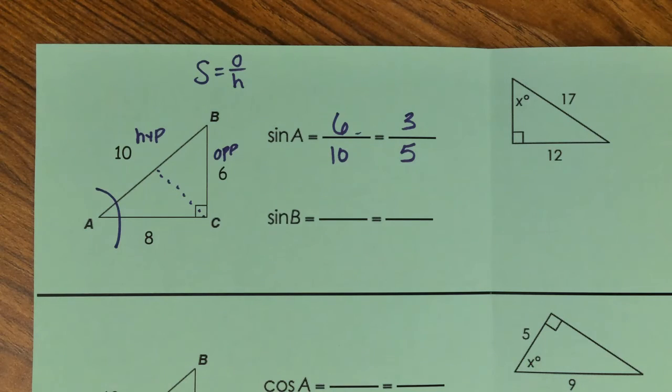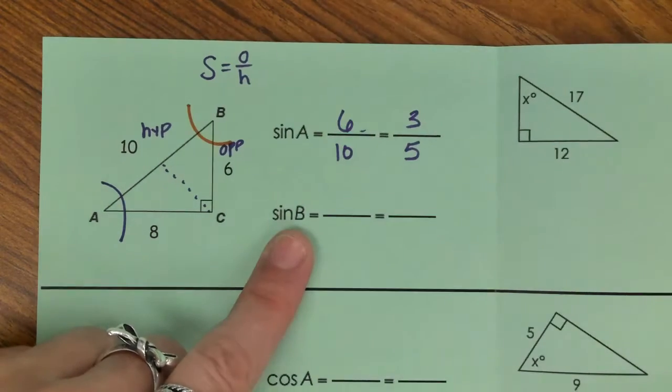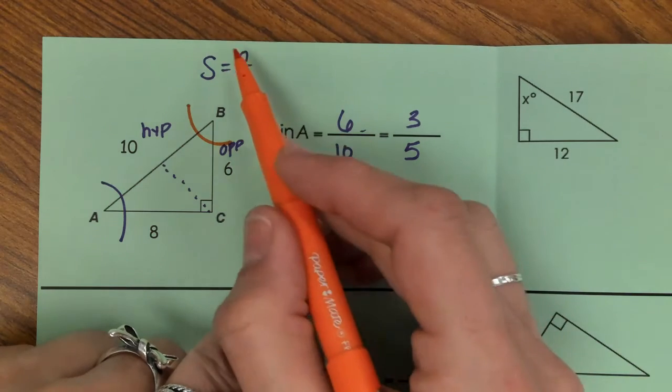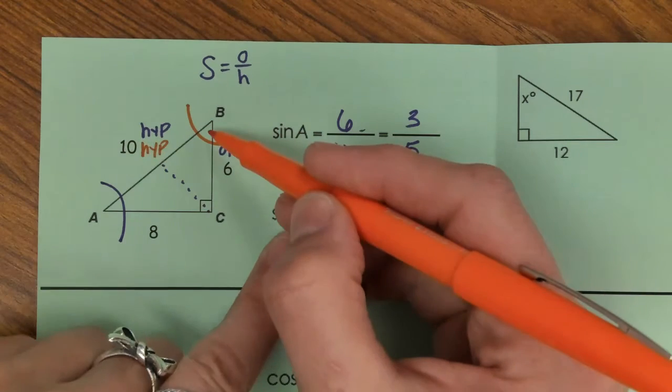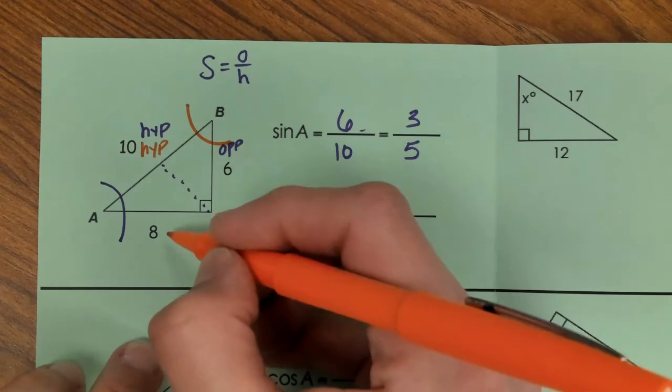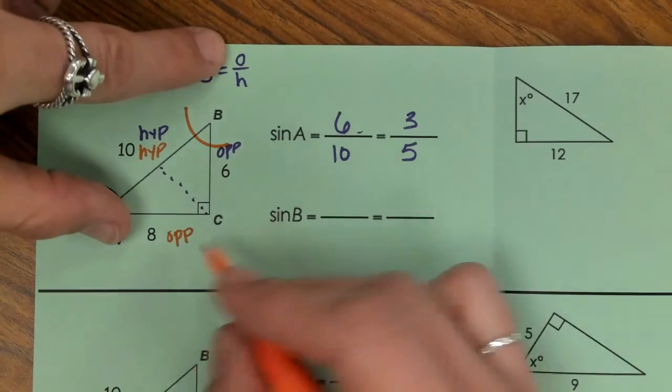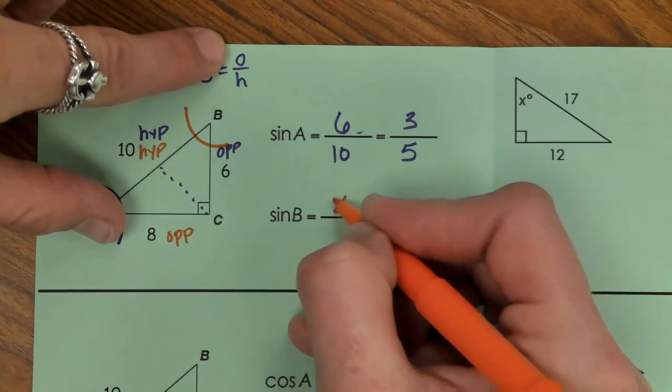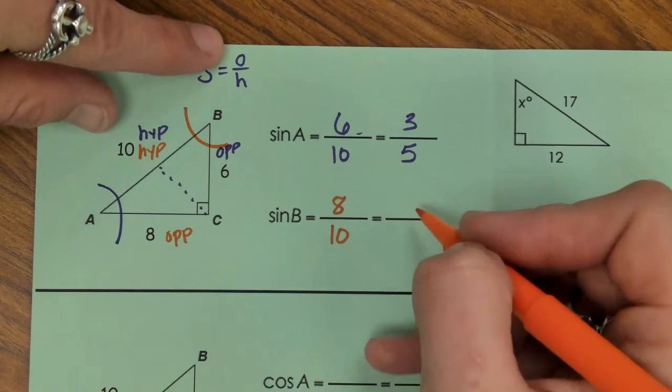If we switch over to reference angle B, we're still doing opposite over hypotenuse. The hypotenuse will not change. This time our opposite side is going to be over here, so we do our opposite of 8 over our hypotenuse of 10, dividing each by 2, we wind up with 4 over 5.